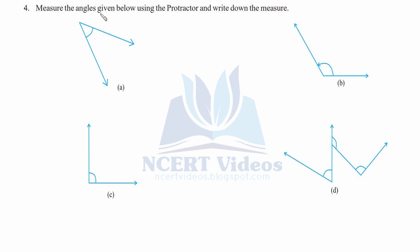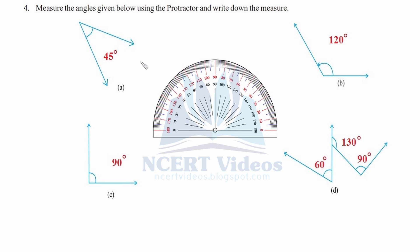Fourth, measure the angles given below using the protractor and write down the measure. We place this point on the straight edge or ray, coincide this ray with it, and see where the other ray falls — it gives 45 degrees. Again, we place the point at the ray's starting point, coincide with 0, and read from 0 to 120 degrees somewhere — that is part B. Coinciding the ray with 0 degree and measuring turns out to be 90 degrees for part C.